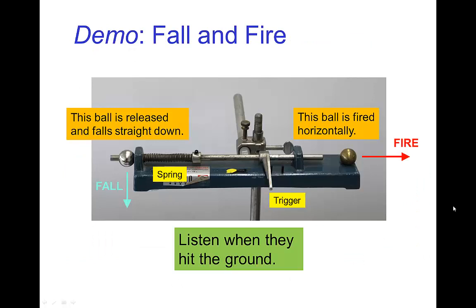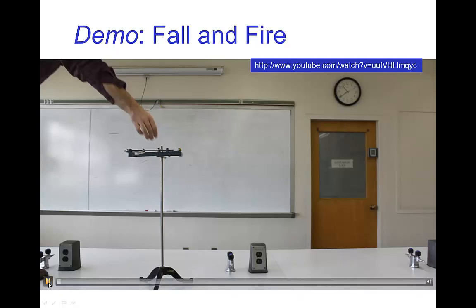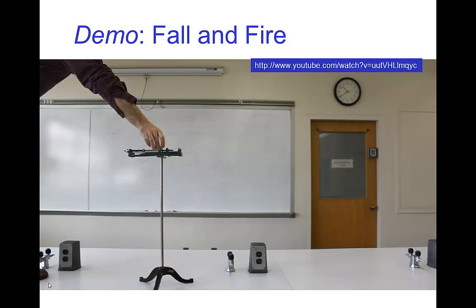Here's another example that demonstrates this. You'll see a video here in a moment where I'm going to pull this trigger. When I pull this trigger, the spring will thrust this rod and the ball on the right side will be fired off horizontally. Simultaneously, when the rod is fired to the right, it will release this second ball that's on the left, and that one will simply fall straight down. Now it all happens rather quick, so listen to when they hit the ground.